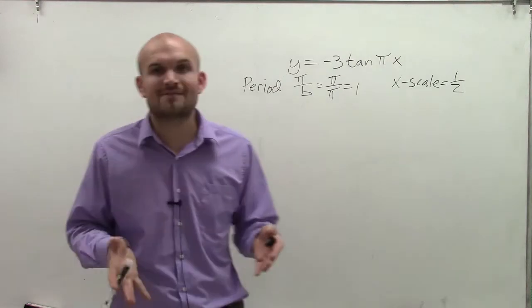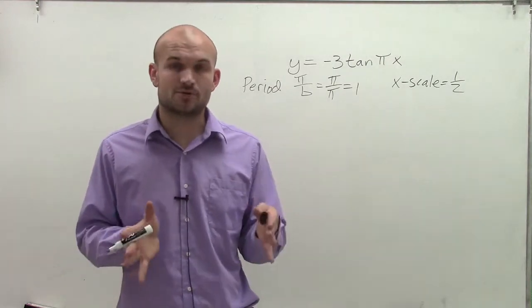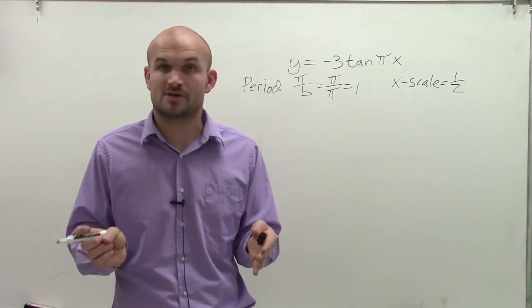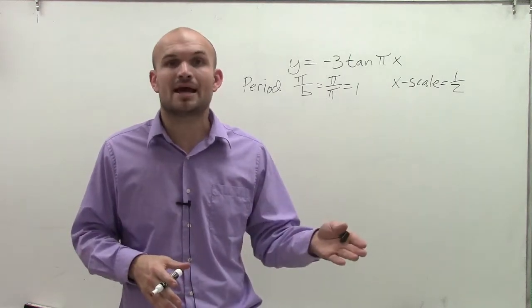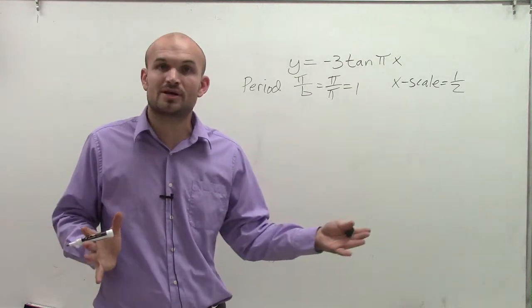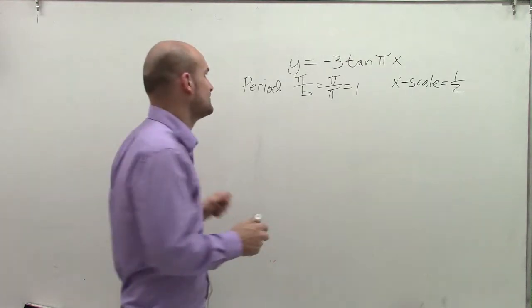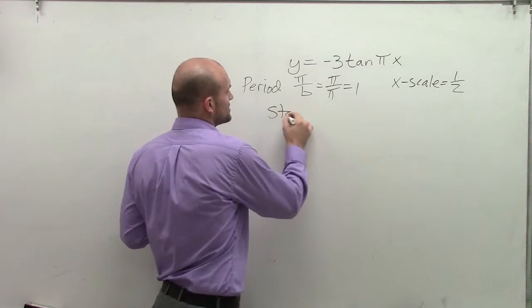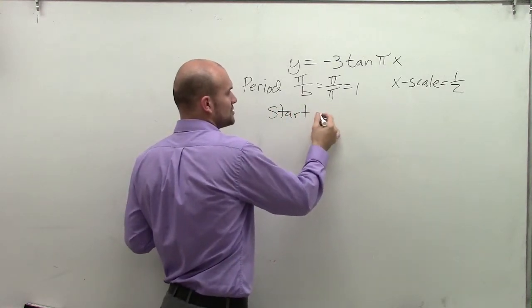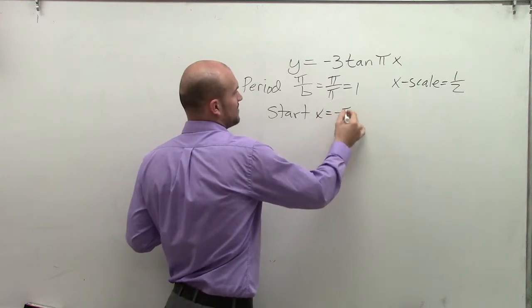Now I want to find our initial period. The initial period of the parent graph of tangent starts at negative pi halves and ends at pi halves. I want to see if there's any change of period or phase shift. I'm going to say the start is when x equals negative pi halves.